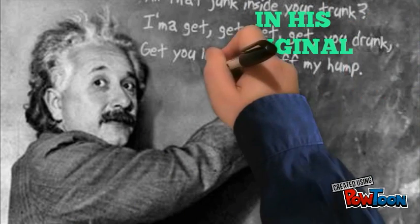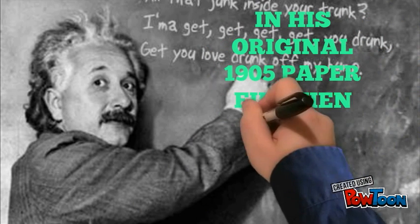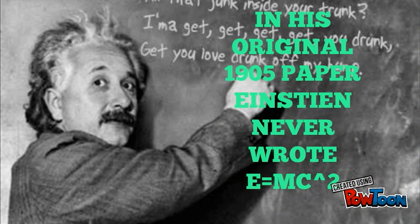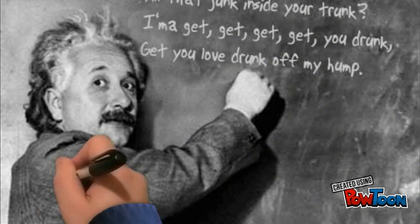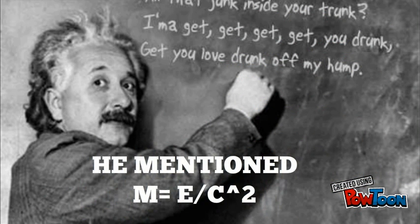In his original 1905 paper, Einstein never wrote E equals mc squared. Instead, he mentioned m equals E by c squared.